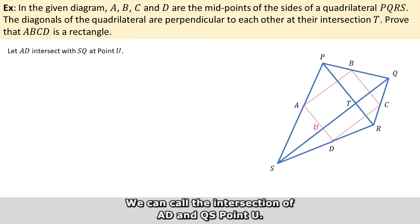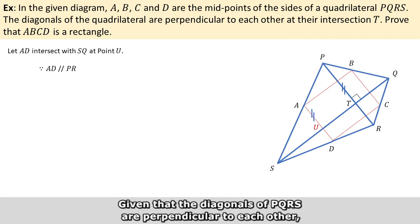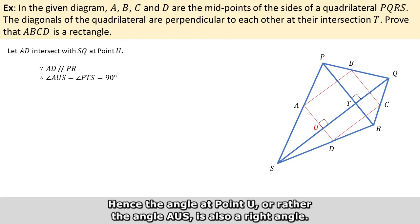We can call the intersection of AD and QS point U, and we already know that AD is parallel to PR. Given that the diagonals of PQRS are perpendicular to each other, the angle at point T will be a right angle. Hence, the angle at point U, or rather angle AUS, is also a right angle.